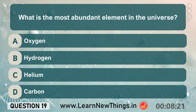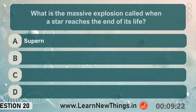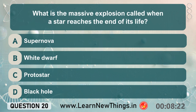What is the most abundant element in the universe? Hydrogen. What is the mass explosion called when a star reaches the end of its life? Supernova.